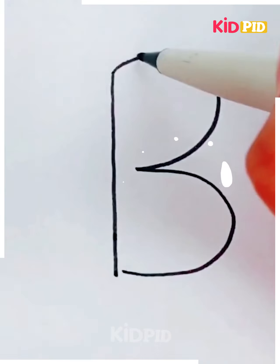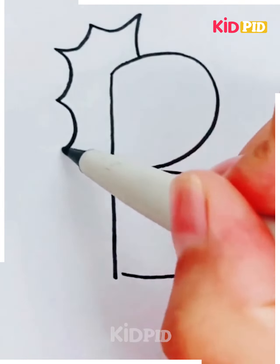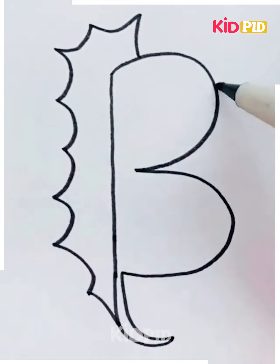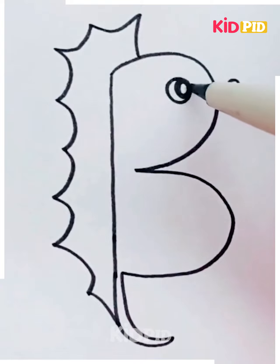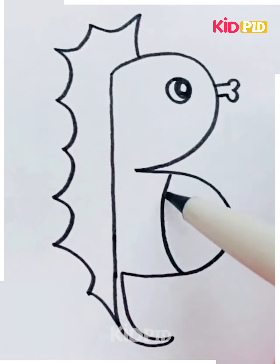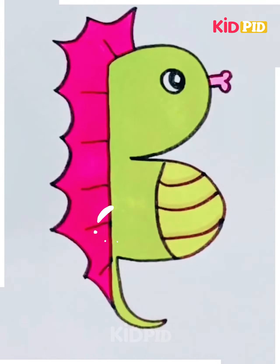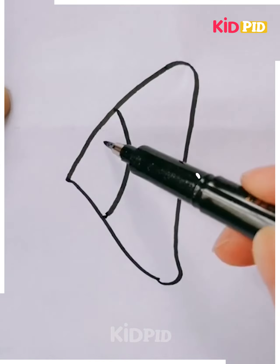I'm drawing a capital letter B shape and then drawing the tail, then drawing eyes and lips, shading them with pink and green color.